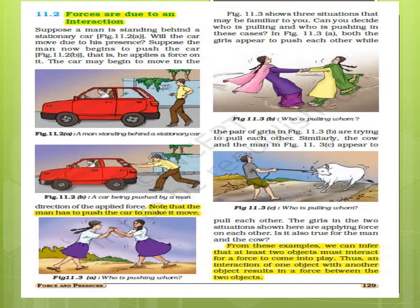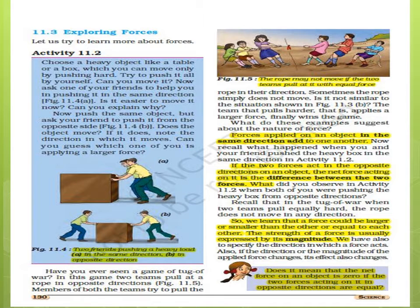An interaction of one object with another results in a force between the two objects. Here you can see a block being pushed by two boys in the same direction. The force applied by them is in the same direction, and hence the net force — that is, the total force — will be the sum of these two forces.